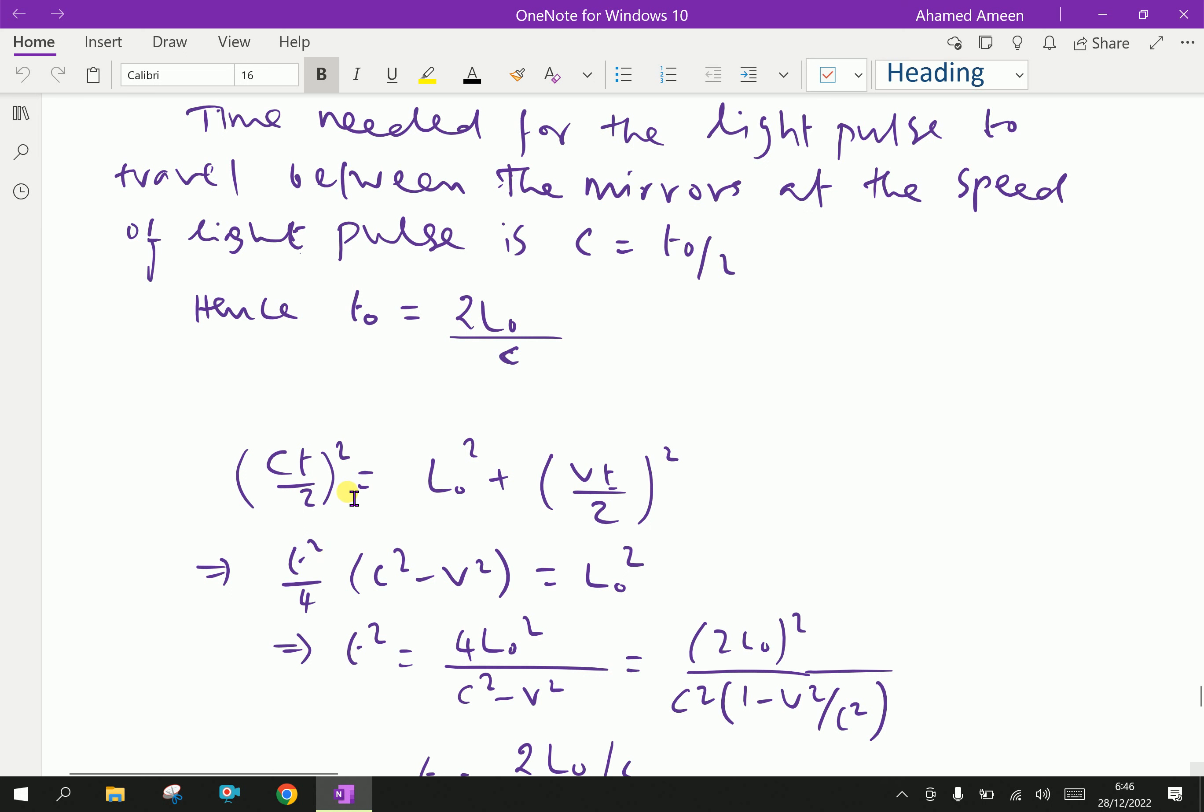Now, opening the brackets. That means squaring both sides. Here, C T square by 4. And here, C square. And this side is L square plus V square T square by 4. Then, collecting, that common factor is T square by 4, we took out. And C square minus V square equal to L zero square.